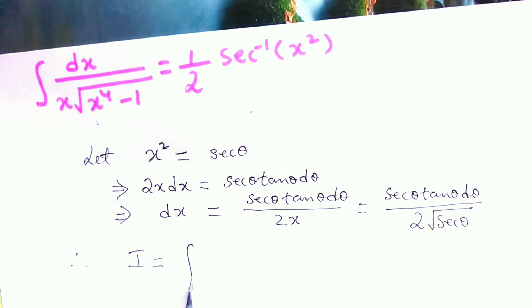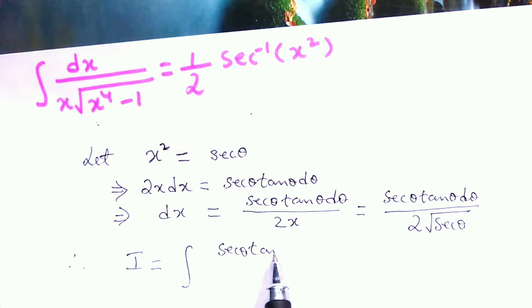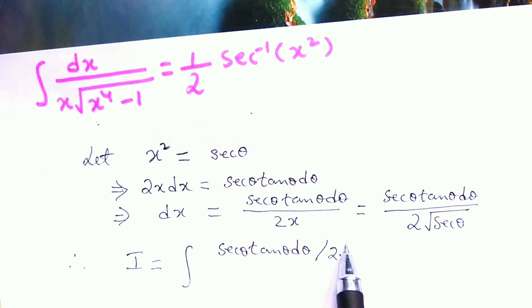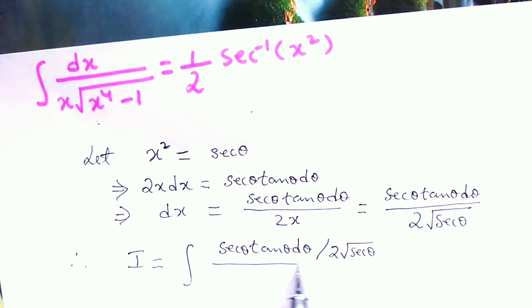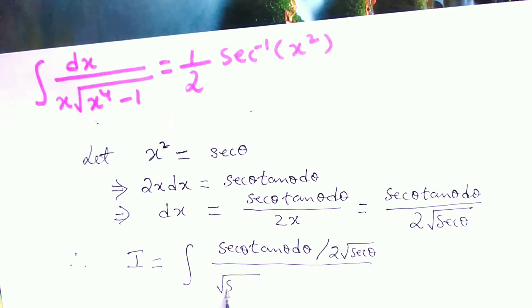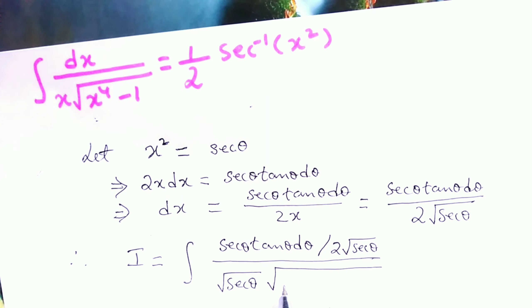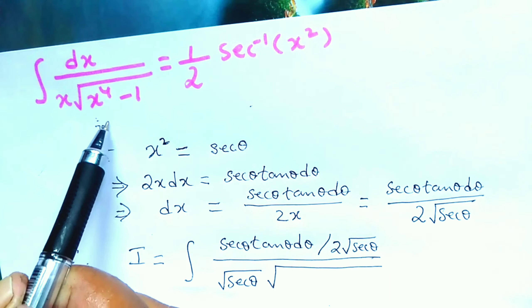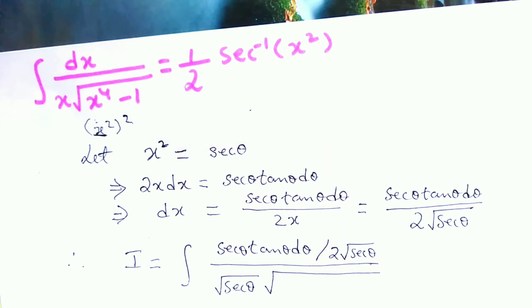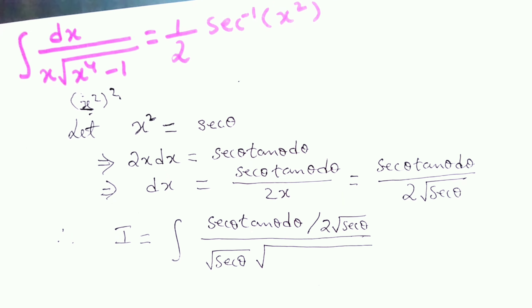Therefore, integral I becomes: in place of dx we have sec θ tan θ dθ divided by 2√(sec θ), and in place of x we have √(sec θ). Under the square root, we have x squared to the power 2, and in place of x squared we have sec θ, giving us sec²θ.